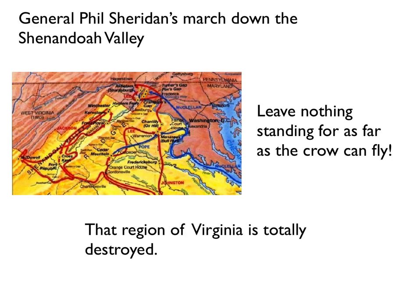This process was repeated by another general named Phil Sheridan. He went down the Shenandoah Valley — the western part of Virginia where it meets what is West Virginia today, a valley between sets of mountains that grew a lot of food. Sheridan's troops marched down the Shenandoah Valley and destroyed everything from one side to the other, the whole length of the valley. Supposedly, Sheridan said to his officers, 'leave nothing standing for as far as the crow can fly.' And that region — the Shenandoah Valley of Virginia — was totally destroyed; every building was burned to the ground.